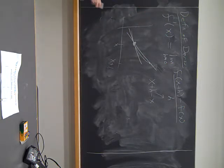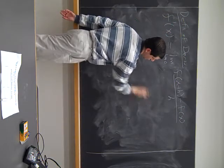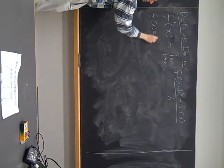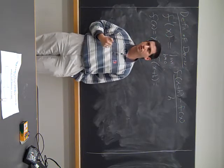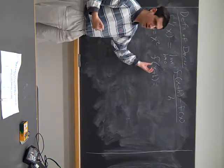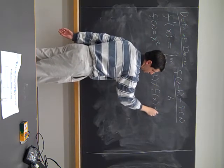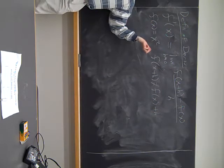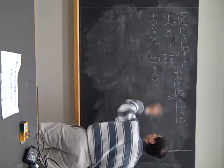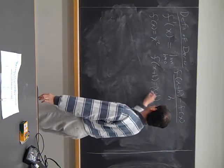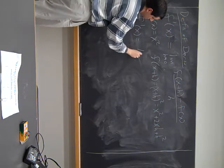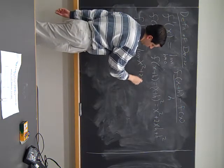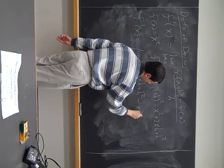Now that we have the definition of the derivative, the question is: can we compute it? Let's take f of x equals x squared. One of the most common mistakes: f of x plus h is not f of x plus h. The rule is the input gets squared, so f of x plus h is x plus h squared, which equals x squared plus 2xh plus h squared. Substituting into the definition, f prime of x is the limit as h tends to zero of x squared plus 2xh plus h squared minus x squared, all over h.